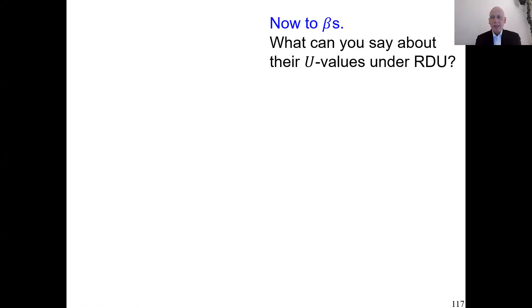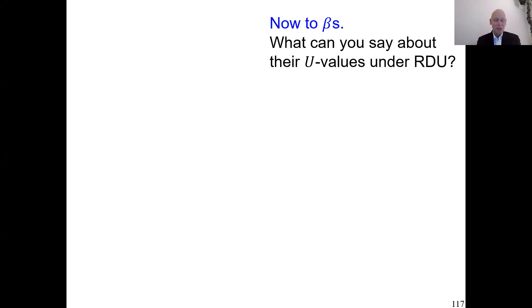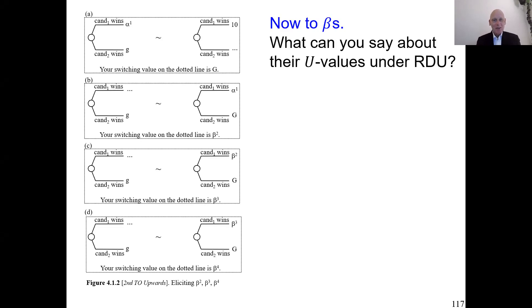Now we turn to analysis of the betas that we measured in our experiment. What can you say about them, especially about their utility values, if we assume rank-dependent utility? In the experiment you did subconsciously as if rank-dependent utility maximization. I put up the stimuli that we used to measure the betas — there was a small g, you chose capital G, then beta 2, and so on.